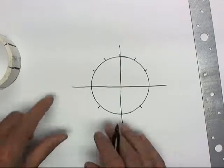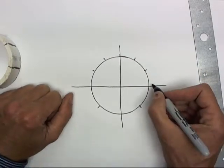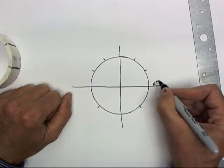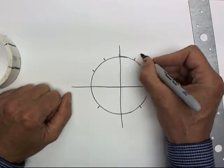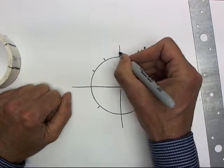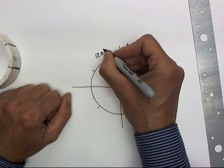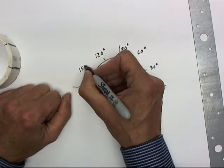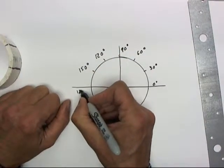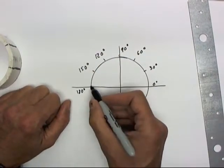So here I've got a pretty good picture. Now I'm going to call this position 0 degrees, this one 30, 60, 90 degrees here, 120 degrees here, 150 degrees here, 180 degrees here.